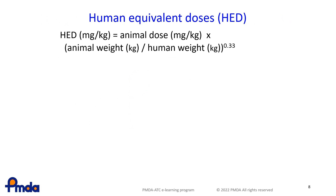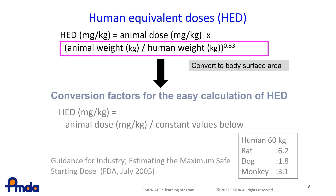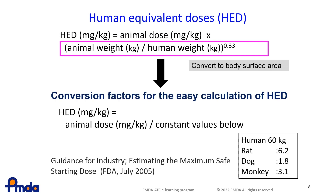HED is frequently used for determination of the initial human dose based on the NOAEL from animal studies. With this method, the human-equivalent dose is calculated by conversion factors considering the difference in body surface area between humans and the animals. In general, the initial human dose is determined by considering the value calculated with this formula and a safety margin. This method is often used for drugs that are administered into the blood vessels.